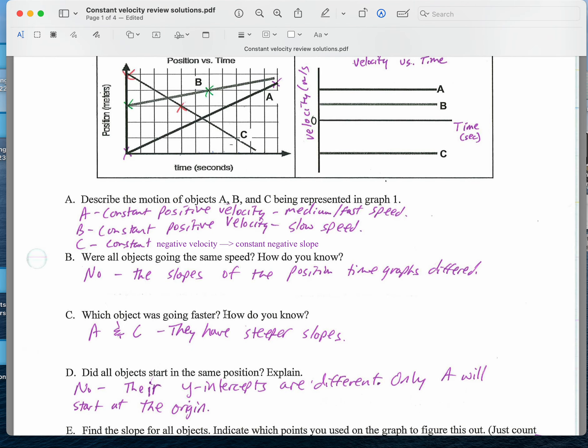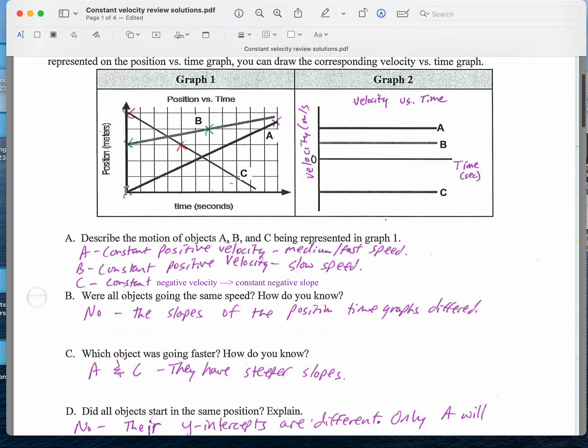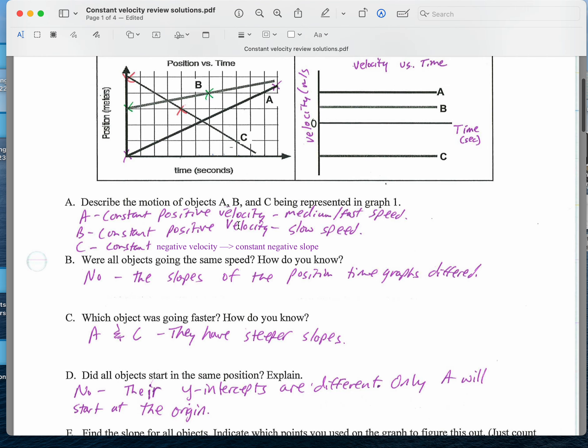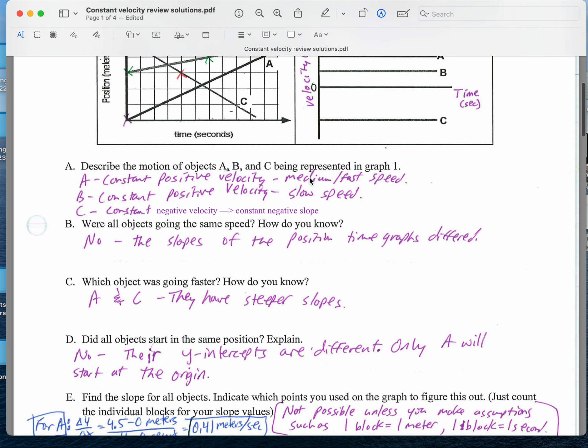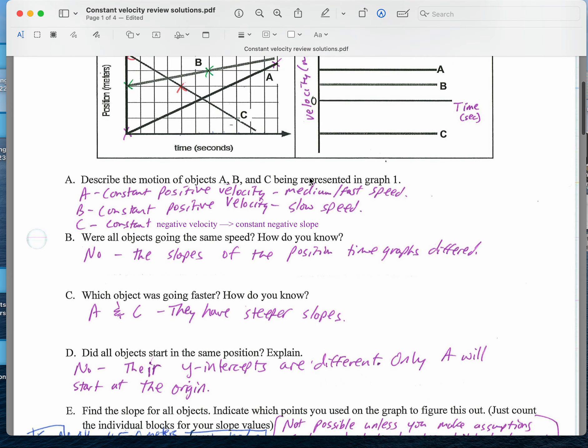Did all the objects start in the same position? Nope. The y-intercept here tells us they start differently. Looks like A starts at the origin or zero meters. B starts at three meters. C starts at somewhere around five meters. And again, these were not numbered. Probably should have been. I thought they were, but that did not transfer over to a Word document from a Google doc.